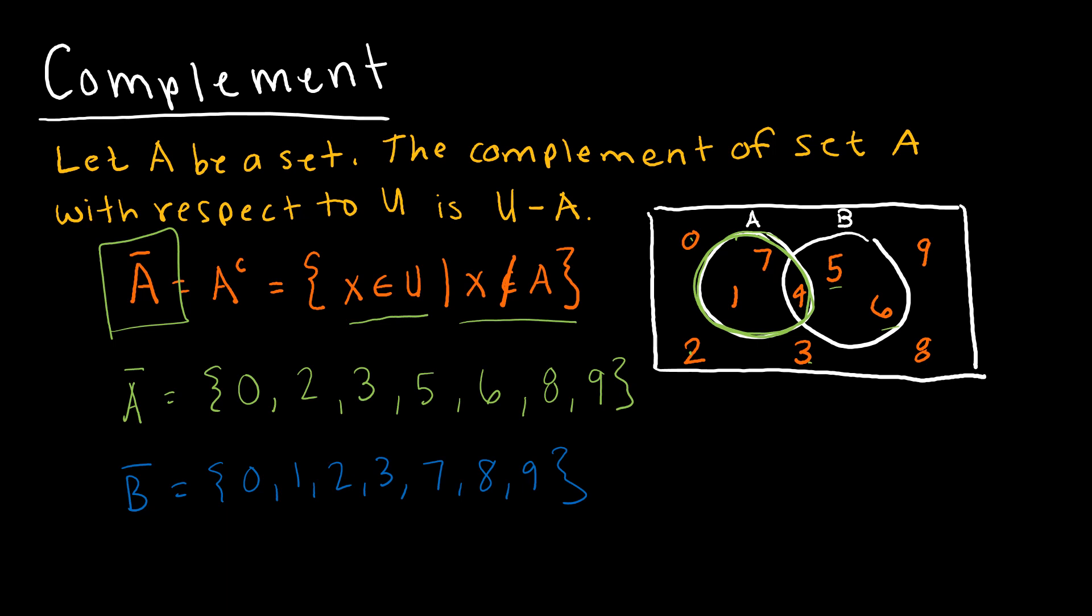And of course you can get crazy and you can say, well, A union B or not A union B. So remember A union B, let me erase my little markings here. A union B is everything inside A or B. So not A union B would be anything that's not inside A or B, which would be 0, 2, 3, 8, 9. So all of those values on the outside.